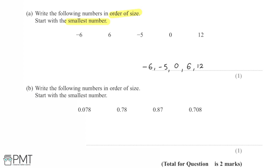I'm then asked to write the following numbers in order of size again, starting with the smallest number. However this time we're working with decimals instead.